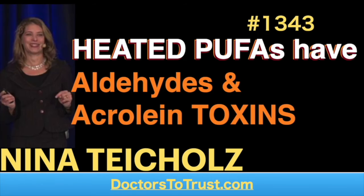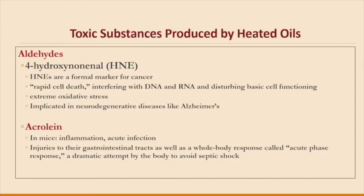With polyunsaturated oil, each one of those double bonds — those equal signs — can open up and attach to an oxidant. That's oxidation, and oxidation drives inflammation. These heated oils in restaurants were producing highly unstable oxidation products. Some well-known toxic oxidation products include aldehydes — actually used as a cancer biomarker, measuring them to assess cancer levels in somebody's body — which cause rapid cell death, interfere with DNA and RNA, and are implicated in neurodegenerative diseases. Another is acrolein, also seen in cigarette smoking, which causes inflammation. Research from Dr. Cheleny at the University of Michigan shows that when you eat these oils, hundreds of oxidation products are absorbed into your body and pass through the blood-brain barrier.